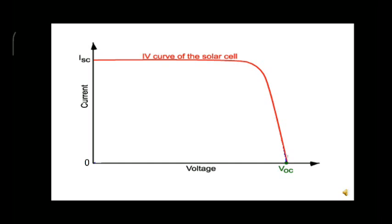Also on the y-axis, there is ISC, short circuit current. You will get ISC whenever the voltage of the circuit becomes zero.